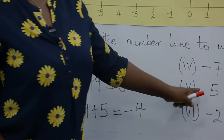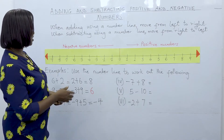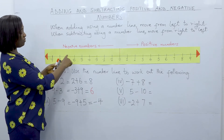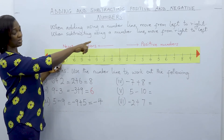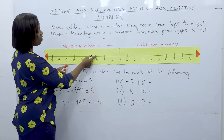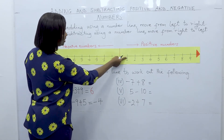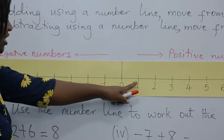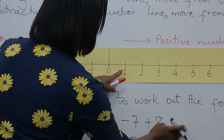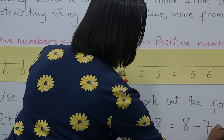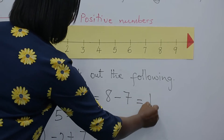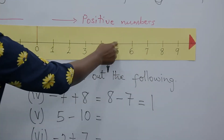Next, minus seven plus eight. Minus seven is on the number line, and we are adding eight to it, so we go forward to the right. How many steps? Eight steps: one, two, three, four, five, six, seven, eight. Minus seven plus eight is equal to one. This is the same as eight take away seven — we all know eight minus seven is equal to one. Counting from eight backwards seven steps confirms the answer is one.